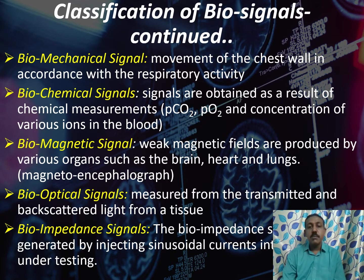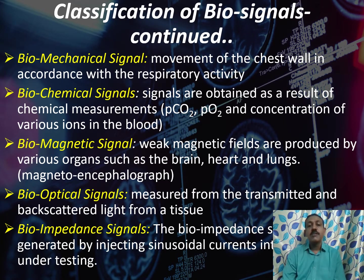Next is bio-optical signals. These optical signals are measured by sending a transmitted signal and measuring the backscattered light from many tissues. Next is bio-impedance signals. The bio-impedance signals are generated by injecting a sinusoidal current into a particular tissue during testing.